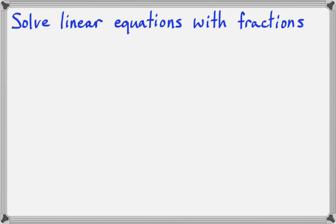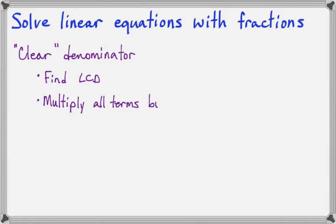We are working with equations now, so instead of trying to get common denominators, we're going to be able to clear out the denominators altogether. And the way we do that is first I want you to find the lowest common denominator, the LCD, but I don't want you to make all the denominators the same. I want you to use the LCD as a multiplier.